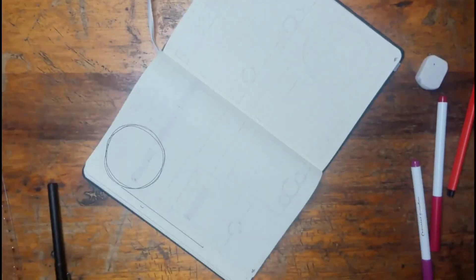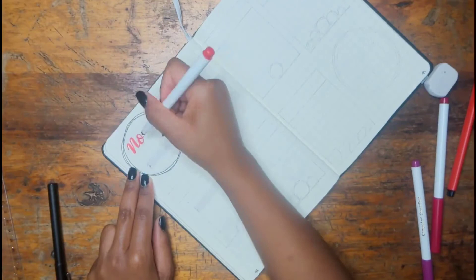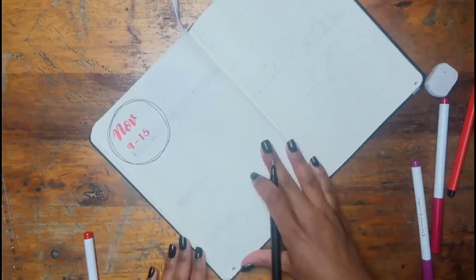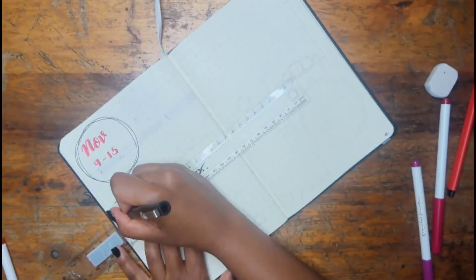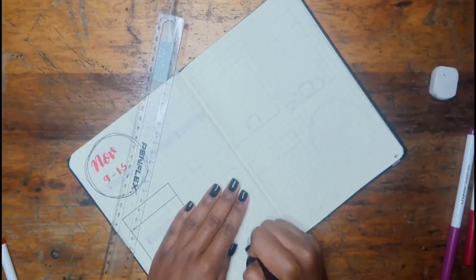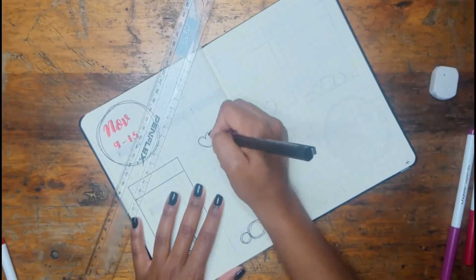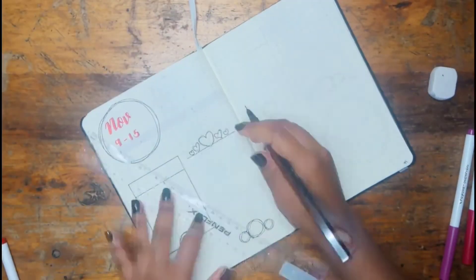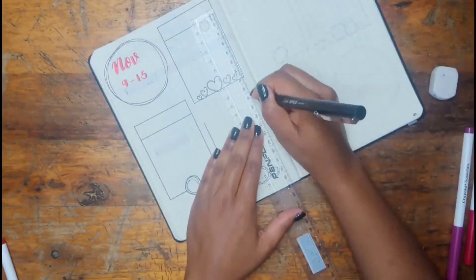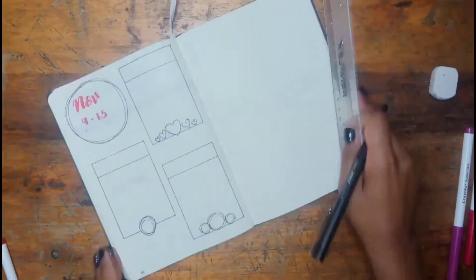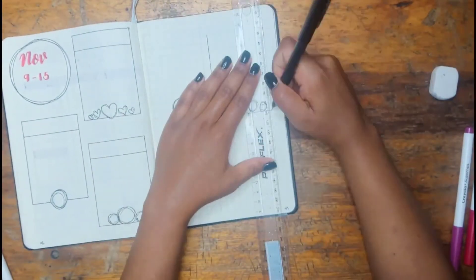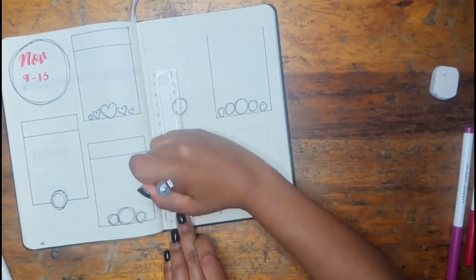My second weekly spread is actually my favorite weekly spread because it gives me enough space to plan. I have enough vertical and horizontal space for all my planning and I don't have to stress about making my handwriting really tiny or anything like that. I just write in my normal handwriting and everything works out, which is why this is my favorite spread.